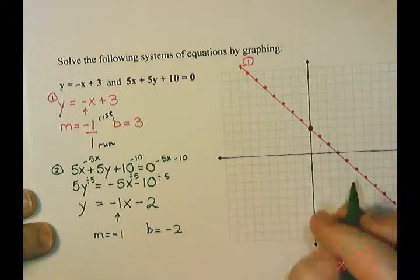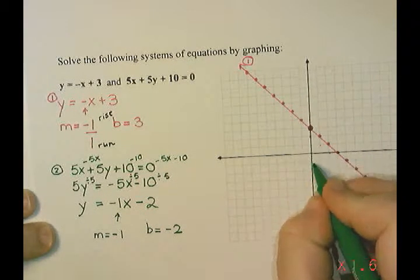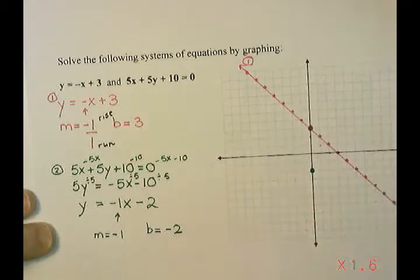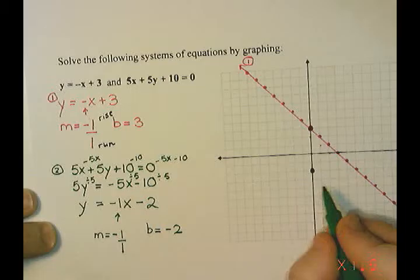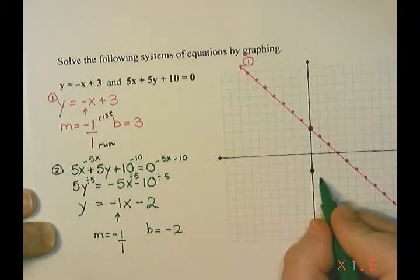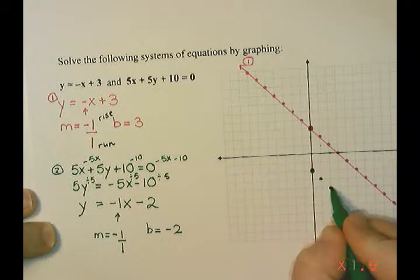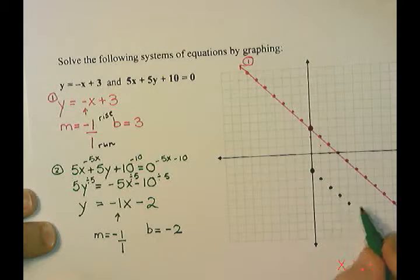So I'm going to start at my y-intercept of negative 2, so on the y-axis we start down at negative 2. And then this is really negative 1 over 1. So we are going to go down 1 to the right 1, down 1 to the right 1. And keep following that pattern all the way.